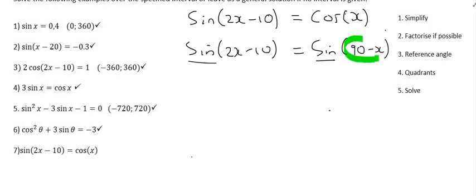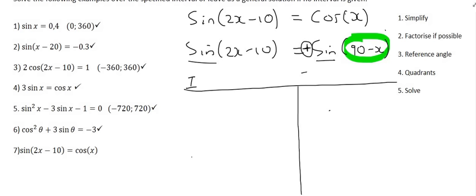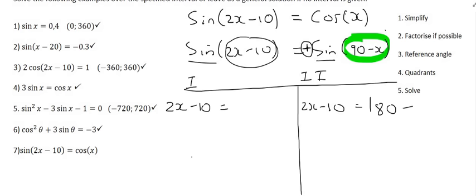Think of 90 minus x as your reference angle — this is the most unusual type of trigonometric equation. We ignore the sin now, but there's a positive in the front, so we work in the quadrants where sin is positive: quadrants one and two. We set up: 2x minus 10 equals 90 minus x (quadrant one, no extra term), and 2x minus 10 equals 180 minus (90 minus x) (quadrant two), each plus k times 360.